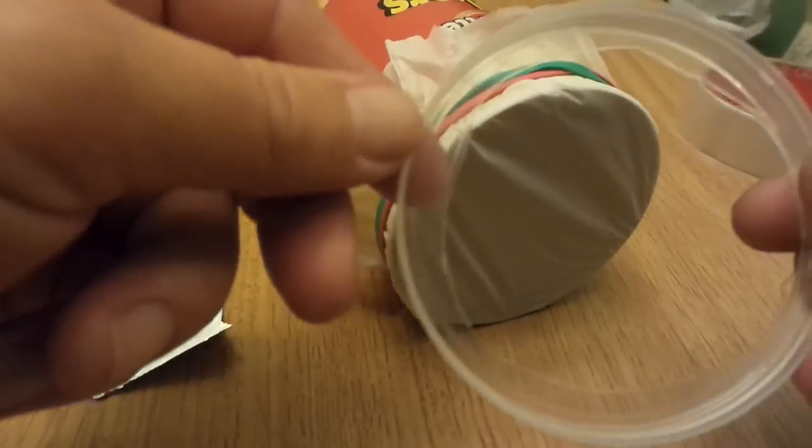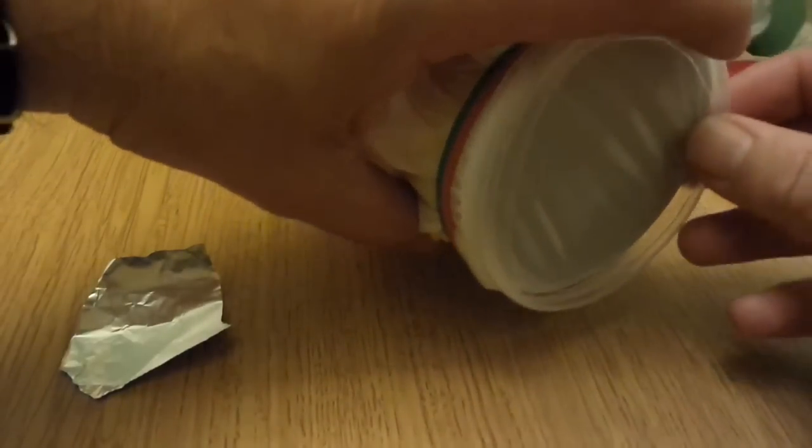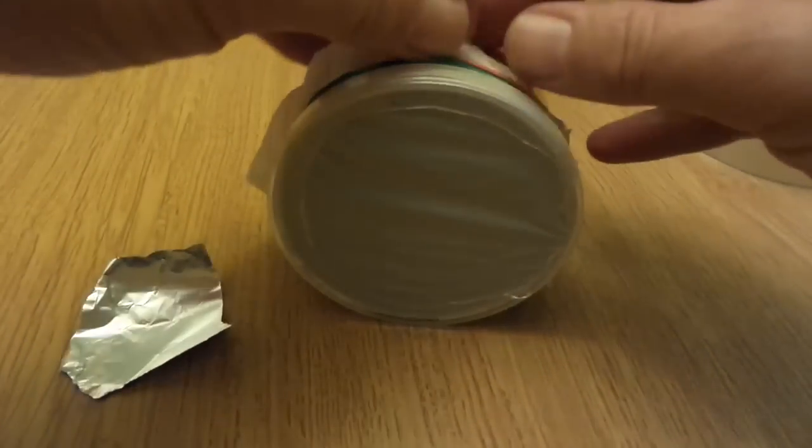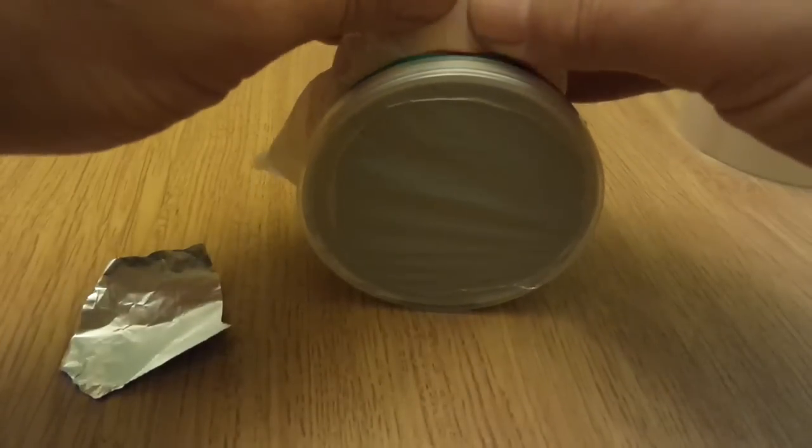What else I've done is I've taken the lid of the Pringles tin, I've cut a hole in the middle just with a knife. That goes on there to help secure it. With a bit of tugging, that'll go nice and flat.